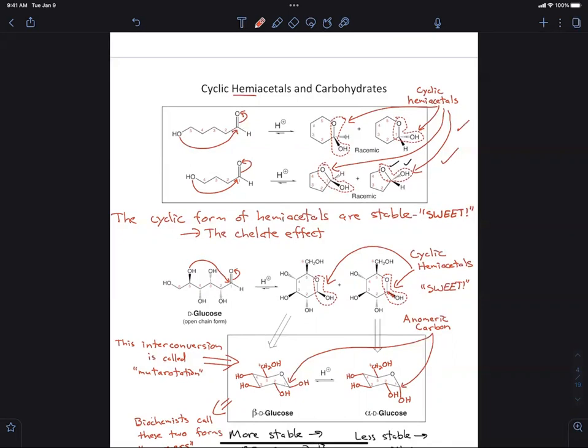But when we make the new bond, the one indicated here, we can get two different stereoisomers. In the case of a non-chiral starting aldehyde with an alcohol attached at either carbon 5 or 4, you get a six-membered or a five-membered ring. And you get a racemic mixture because that OH group can either be coming towards you or going away. You get two different chiral centers.